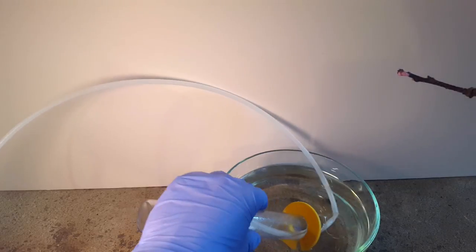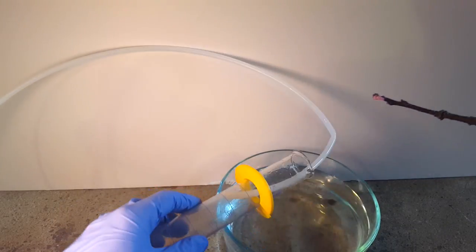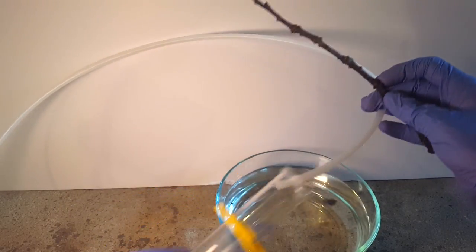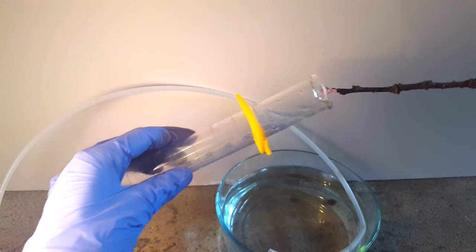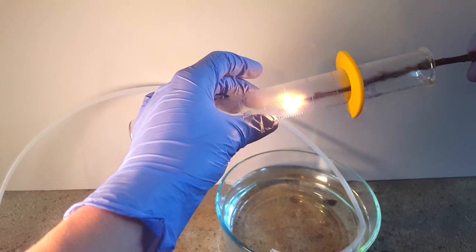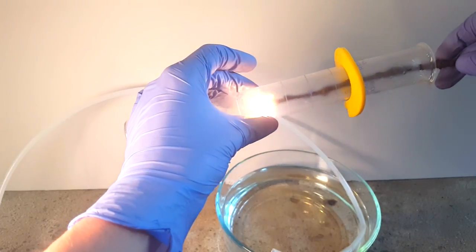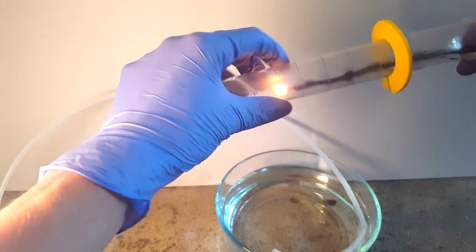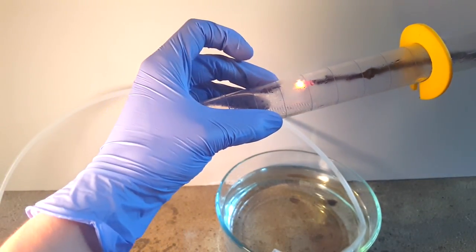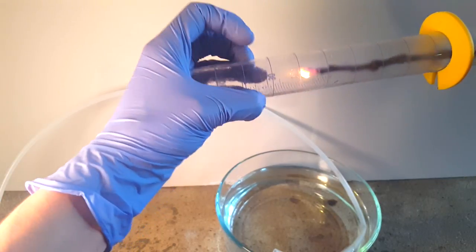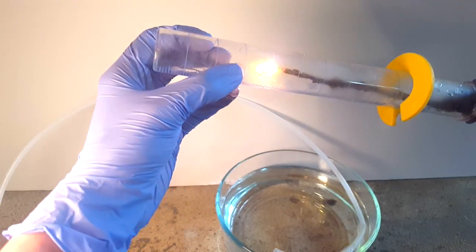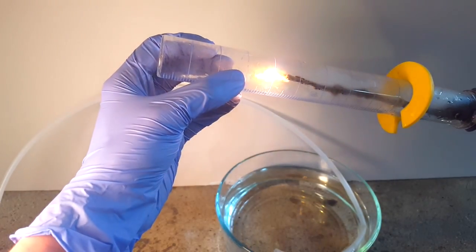To test if this really was oxygen, I took a twig and charred it slightly. Then I placed it into the cylinder to see if the gas had any effect. Obviously it did, as the stick started to glow brightly and burn far faster. You can actually see some of the water vapor building up on the side of the cylinder, due to the complete combustion of the organics in the twig.